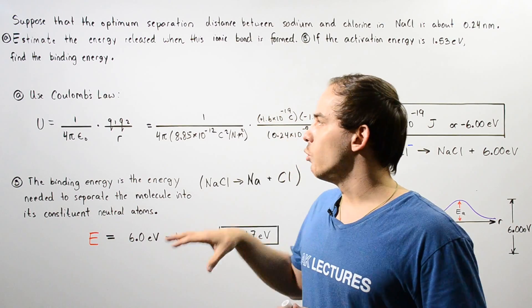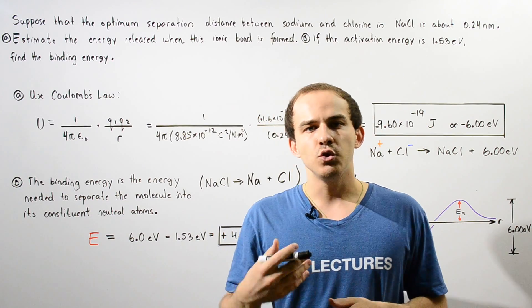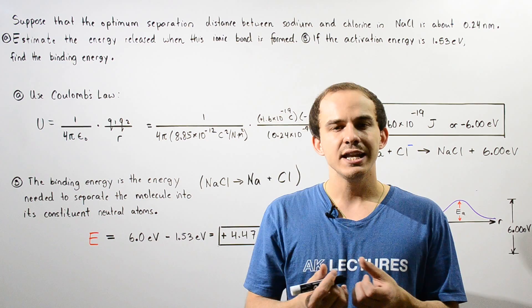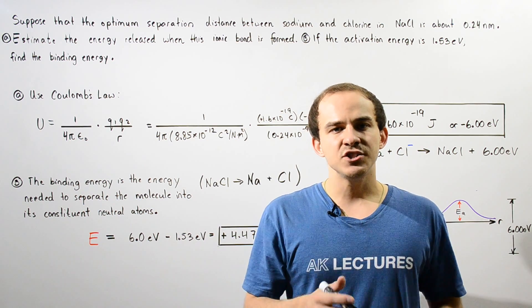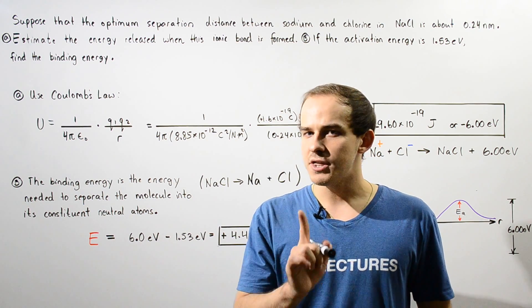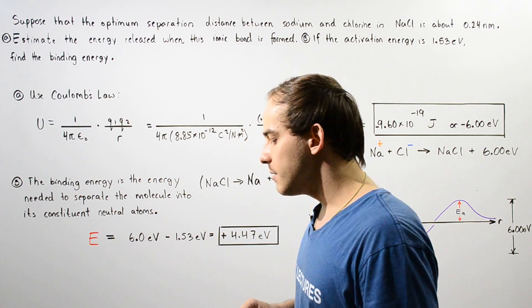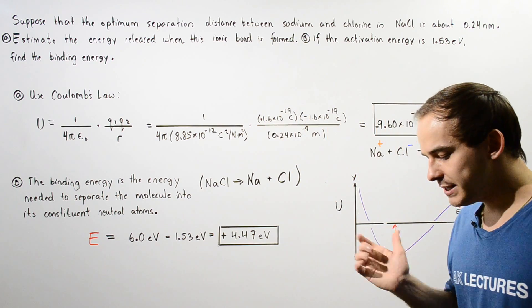Let's examine the following example that deals with using Coulomb's law to calculate the amount of energy released when an ionic bond is formed, and then calculate the binding energy. So let's begin.